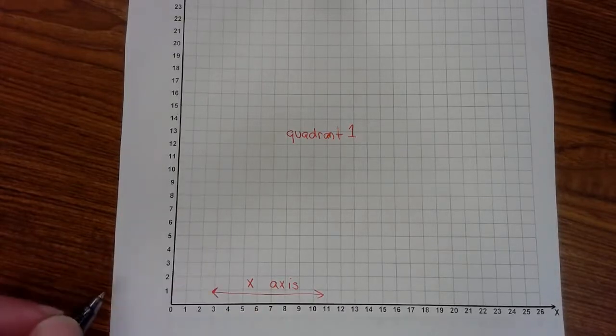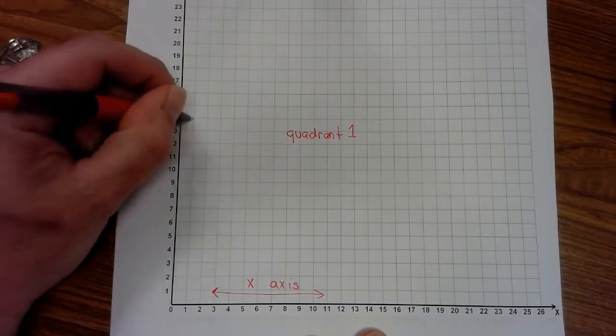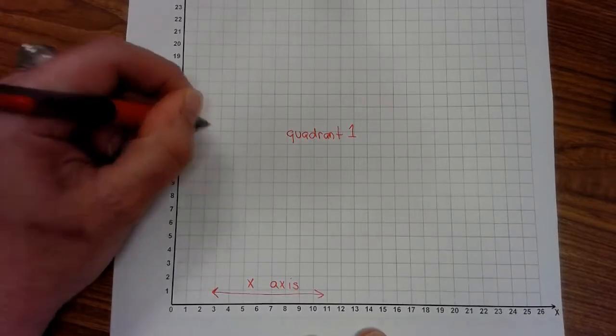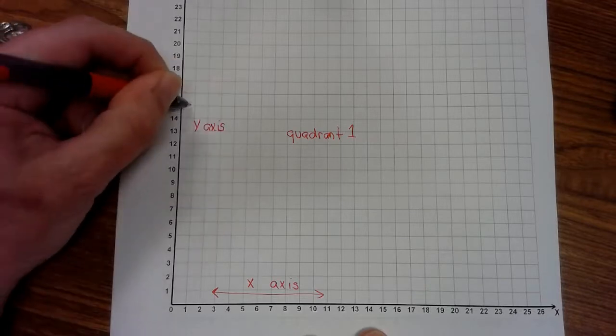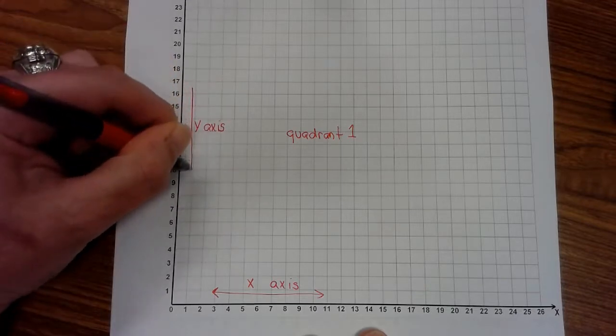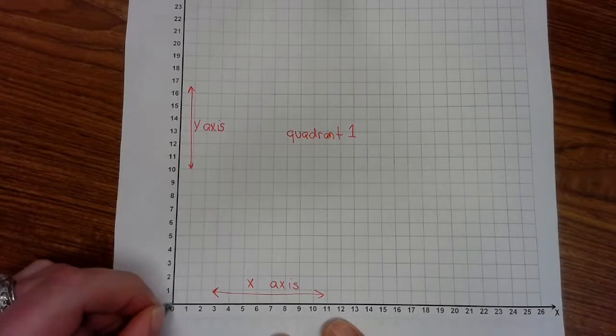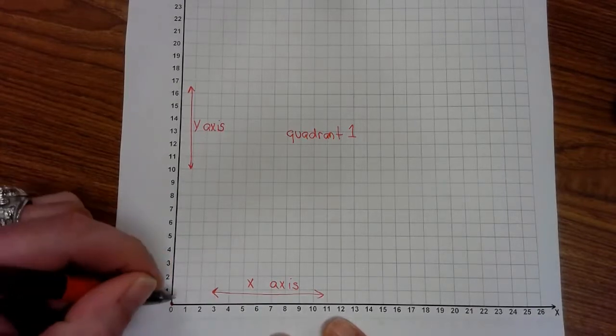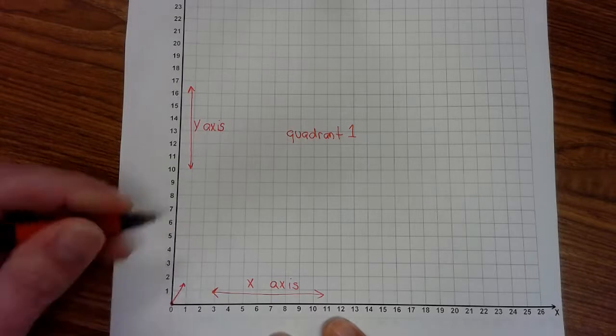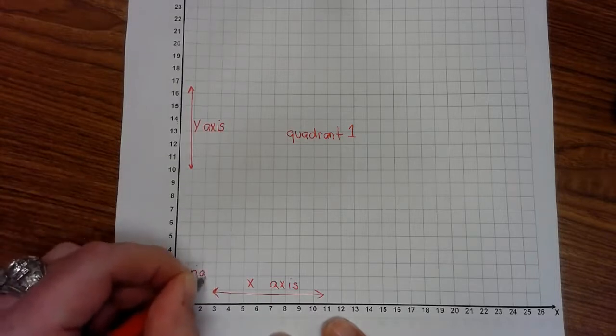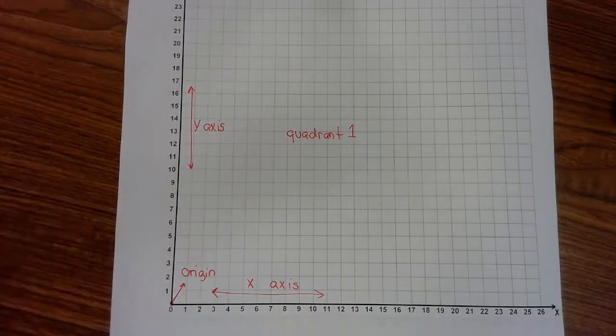And then you have the y-axis. This line runs vertical. Another very special place is the origin. Origin is zero.